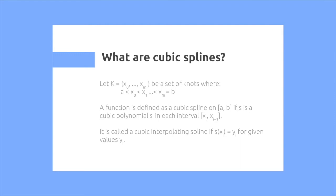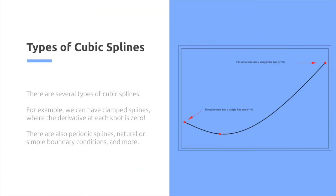So effectively, you need to pass through each of the different knots in the final cubic spline. So there's several types of cubic splines. For example, we can have clamp splines where the derivative at each knot is 0.